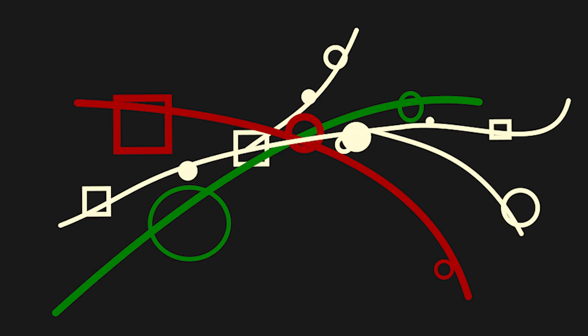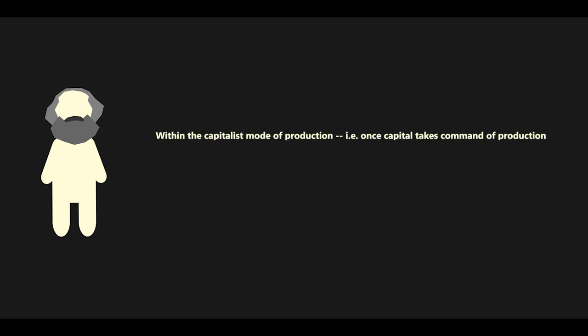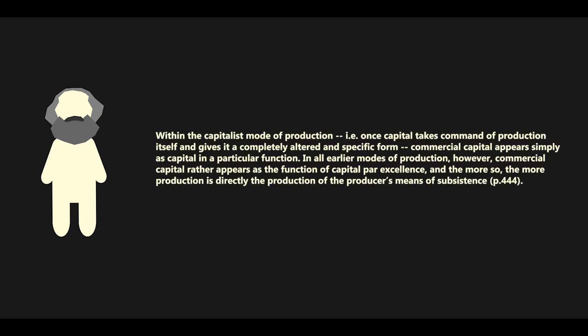In this passage from chapter 20 of volume 3, Marx argues that commercial capital, already present before the advent of capitalism, underwent a transformation of function during the transitionary phase. Within the capitalist mode of production, i.e., once capital takes command of production itself and gives it a completely altered and specific form, commercial capital appears simply as capital in a particular function. In all earlier modes of production, however, commercial capital rather appears as a function of capital par excellence, and the more so, the more production is directly the production of the producer's means of subsistence.